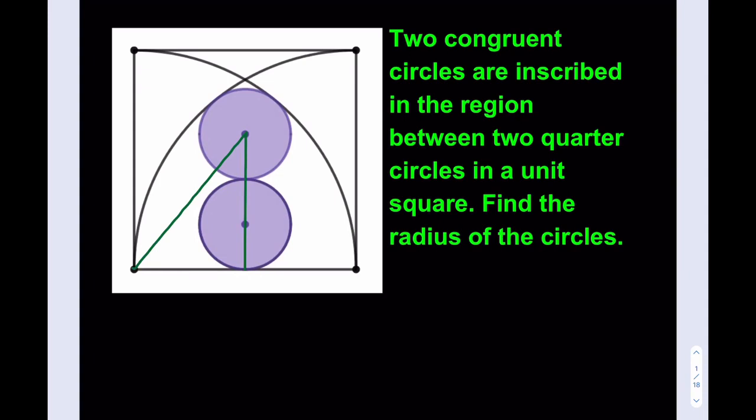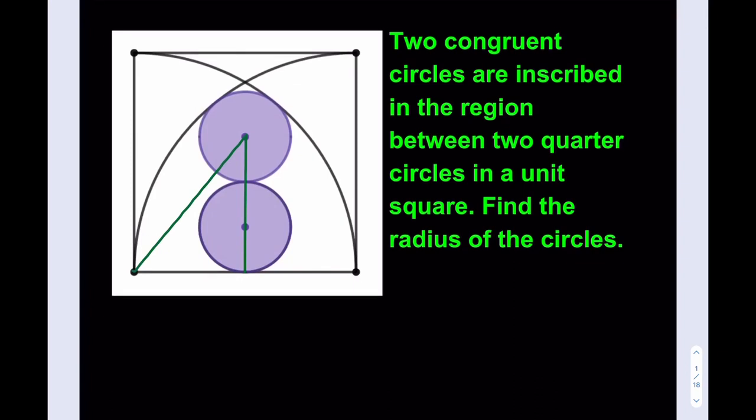So we have now r. Well, maybe I might just extend this a little bit to show you where that comes from. Okay, so this is a point on the quarter circle. Of course, I'm considering this one with this center. The other one is similar because they're symmetrical.